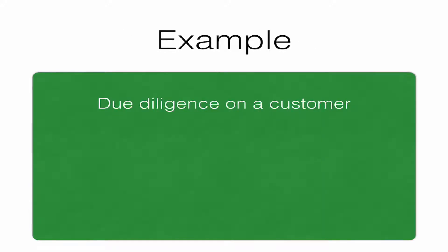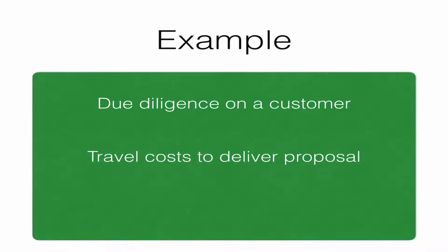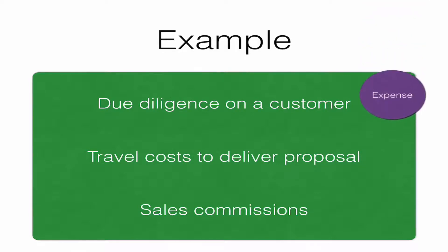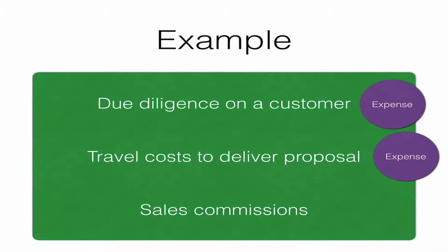Let's look at an example of costs of obtaining the contract. You do some due diligence on a customer, you make some travel costs to deliver the proposal, and then there's sales commission on getting the contract. Due diligence — are these incremental costs? Not really. You would expense them because these would have been incurred whether you won or didn't win. Travel costs to deliver the proposal — very similar. Expense them, because these would have been incurred whether or not the tender was won.